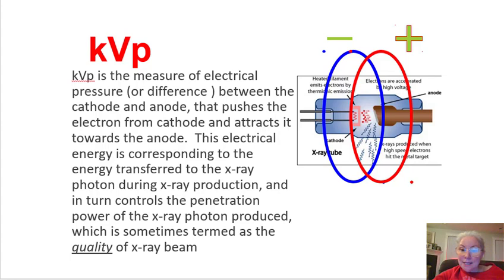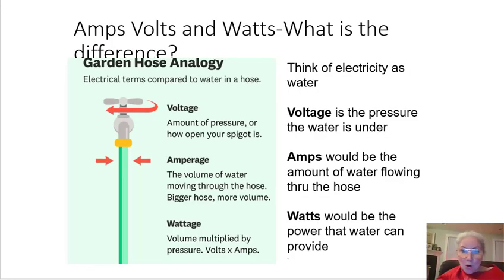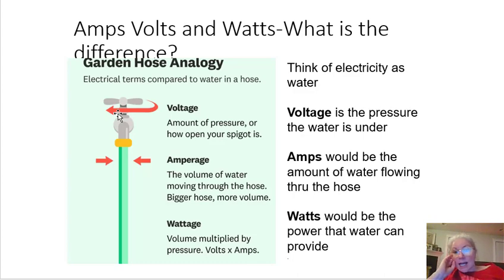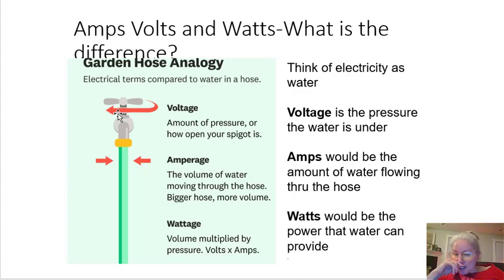kVp is sometimes referred to as quality. Here's the garden hose analogy: voltage has to do with how open the spigot is — the pressure the water is under. The amps is the amount of water flowing through the hose and the volume of water moving through it; the bigger the hose, the more volume. Wattage would be the power that the water can provide.